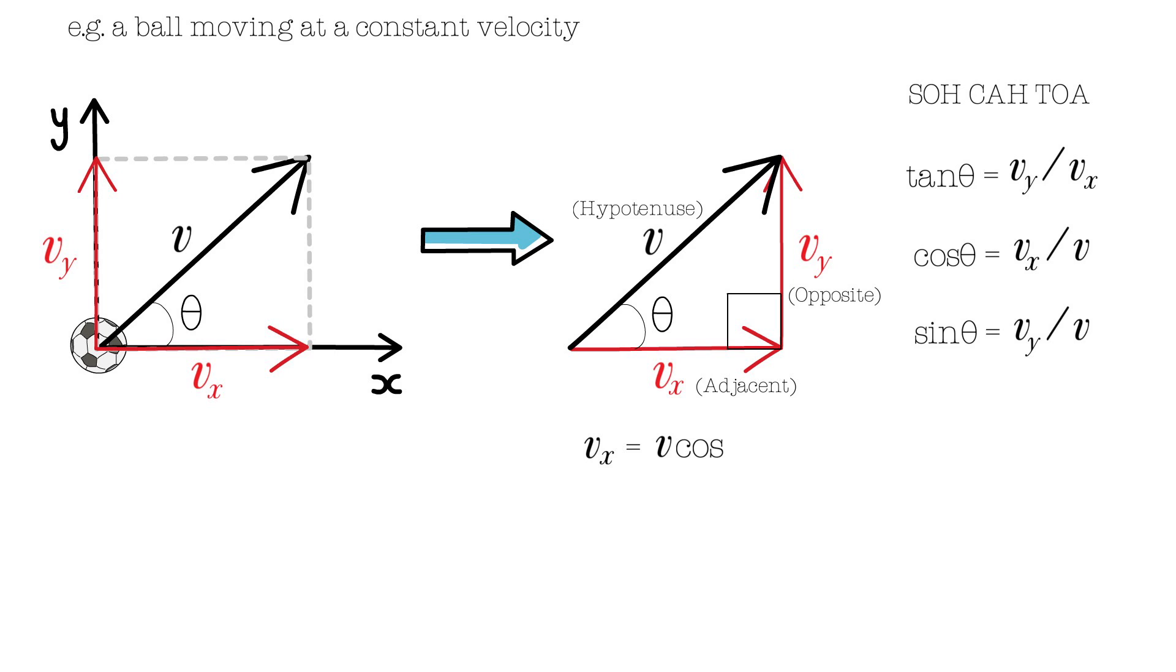Using COS and SINE, we can calculate the horizontal and vertical components given the angle theta and the resultant vector v.